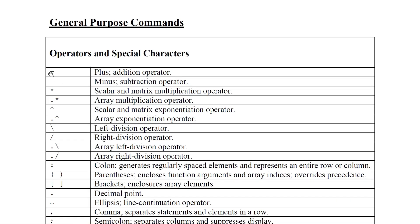The first operator is plus, so a plus b — that is the addition operator. Then minus is the subtraction operator, star is the multiplication operator. Then dot-star is used for array multiplication — each element will be multiplied. The caret is the exponential operator for scalars as well as matrices, and dot-caret is the element-wise array exponential operator.